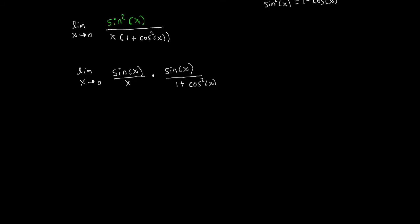Sine squared of x means I have two copies of sine x and I decided to put one over x and then the other one over the 1 plus cosine squared of x.